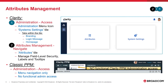To manage field-level security, label changes, and tooltips in Clarity, the administrator needs to have the Attributes Management Navigate right granted plus the Administration Access right. With this combination, the admin can manage attributes and system settings in Clarity. No additional administration activities can be performed within Classic PPM.